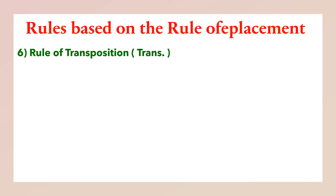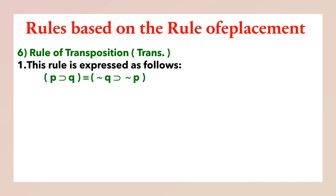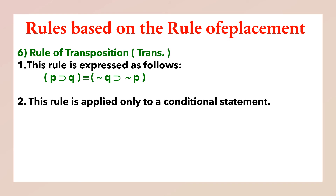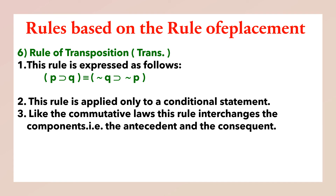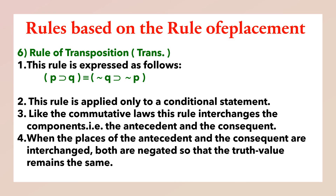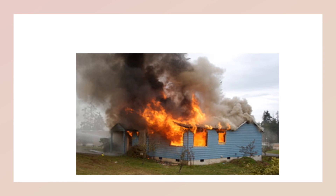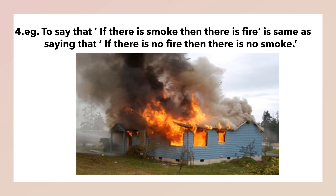Now we come to the sixth rule: the rule of transposition. This rule is expressed as follows: P implies Q is equivalent to not Q implies not P. This rule is applied only to a conditional statement. Like the commutative law, this rule interchanges the components — that is, the antecedent and the consequent — but here we apply it only for an implicative statement by negating both of them, so that the truth value remains the same. For example: 'If there is smoke, then there is fire' is the same as saying 'if there is no fire, then there is no smoke.'